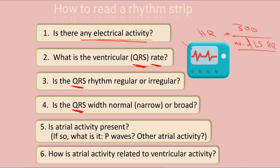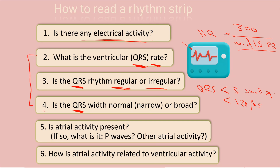The third question: is the QRS rhythm regular or irregular — are the spaces between the R intervals regular? The fourth question: is the QRS width normal or wide? Normal QRS should be less than three small squares or less than 120 milliseconds. These three questions are about ventricular contraction. The fifth question: is there atrial activity — is there a P wave?